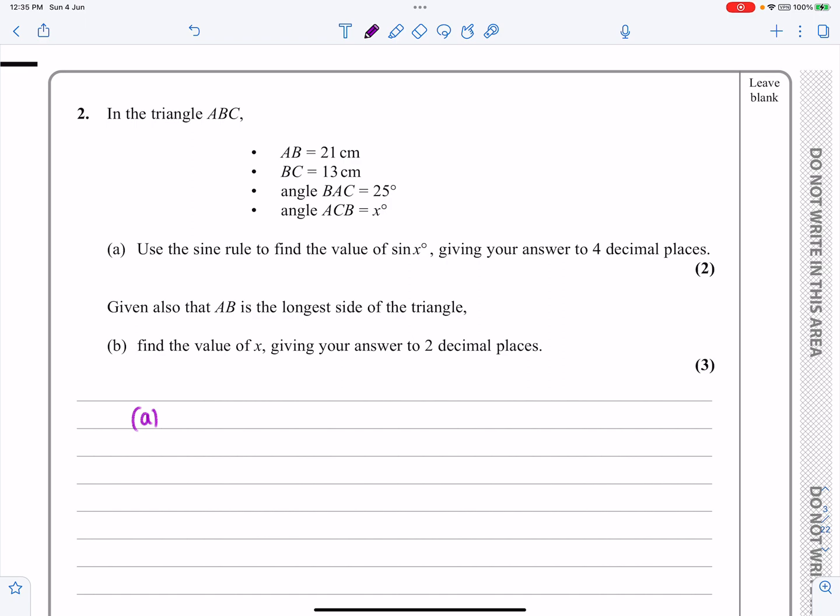It says I've got a triangle ABC, so let's draw a triangle out. Let's label it first. I'm going to call this A, this B and this C. AB is equal to 21 centimeters, BC is equal to 13 centimeters. So yeah, my diagram looks alright, 13 there being a little bit shorter than that 21.